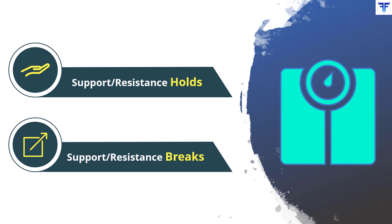When a support or resistance is broken, at first it is difficult to say whether that break is genuine or fake. That said, there are filters that can be used to confirm the validity of the break. Let us first talk about what constitutes a false break and what constitutes a genuine break.